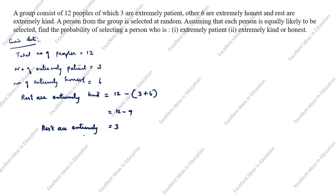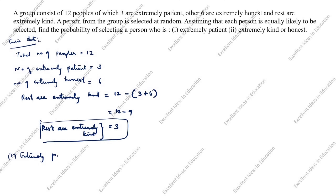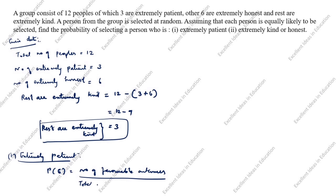What we need to find: first question is extremely patient. P(E) equals number of favorable outcomes divided by total number of possible outcomes. Number of extremely patient is 3, and total number of possible outcomes, that is total number of people, is 12. So 3 divided by 12 — 4 threes are 12 — equals 1 by 4. So probability of selecting an extremely patient person equals 1/4.